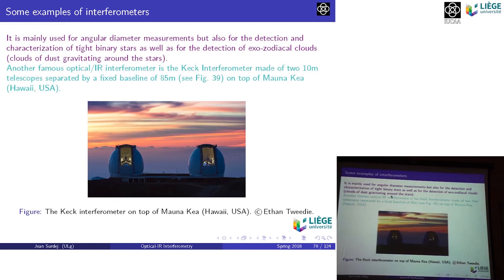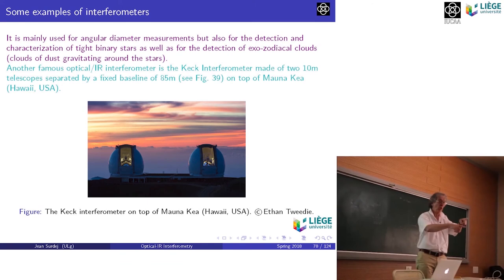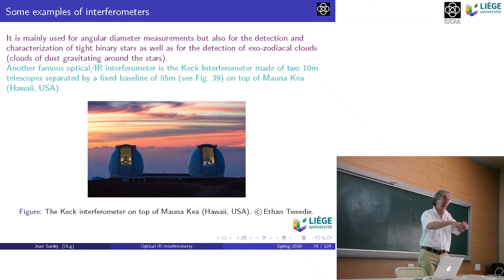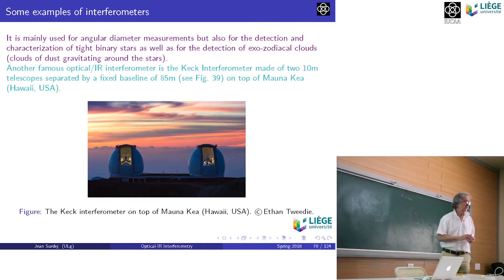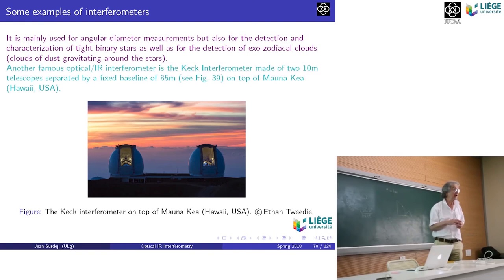Another famous optical/infrared interferometer is the Keck Interferometer — two 10-meter telescopes separated by a fixed baseline of 85 meters on top of Mauna Kea. It was mainly used as a nulling interferometry machine: instead of combining the two beams in phase, they combine them in opposite phase, nulling the image from the star and looking around it for companions, exozodiacal dust, etc. It was mainly funded by NASA. They completed their survey and the funds were cut, so it's no longer used as an interferometer.